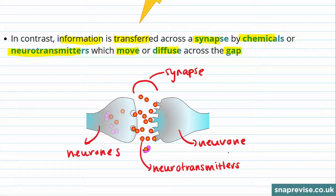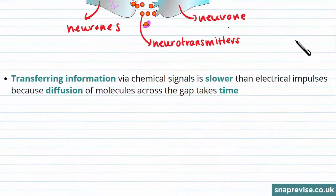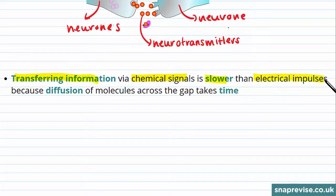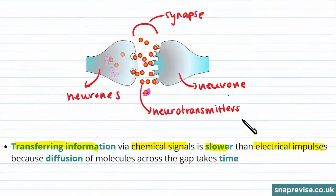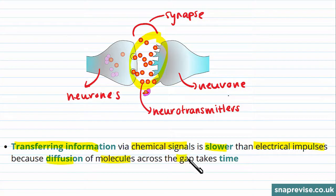Transferring information via chemical signals is slower than electrical impulses, because there's diffusion of these particles across the gap, and this takes time.